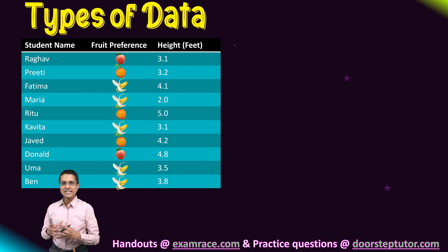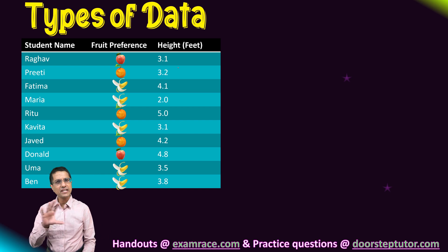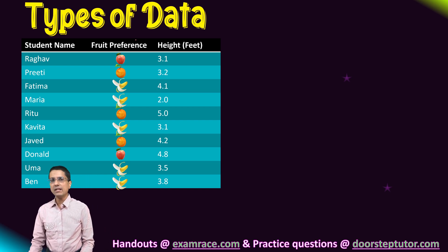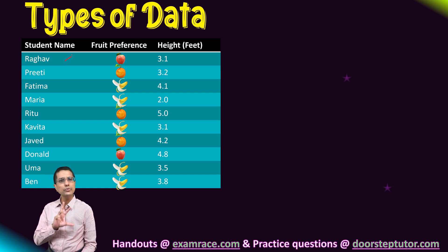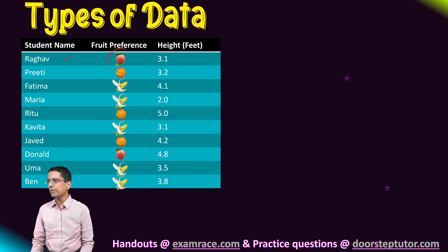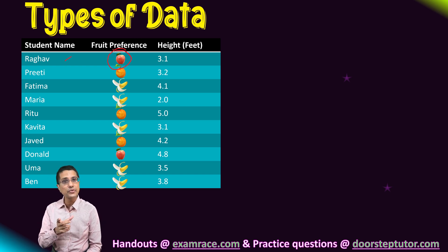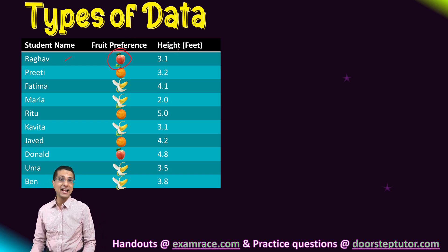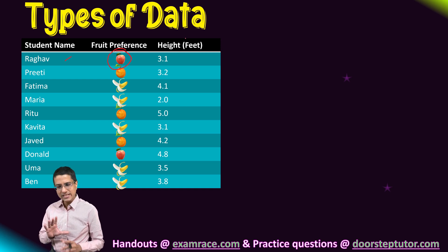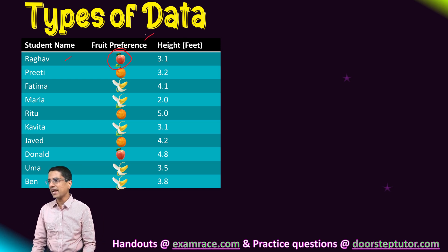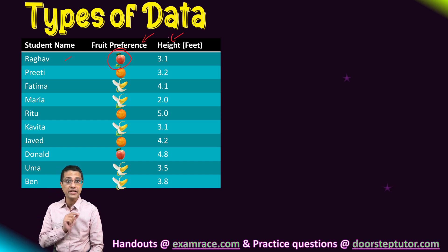Before moving further, let's spend a minute understanding the different kinds of data that we encounter. Here we have a table with student names, and against each student we have two things. Although the data might seem similar, the two kinds of data we have here are indeed quite different.